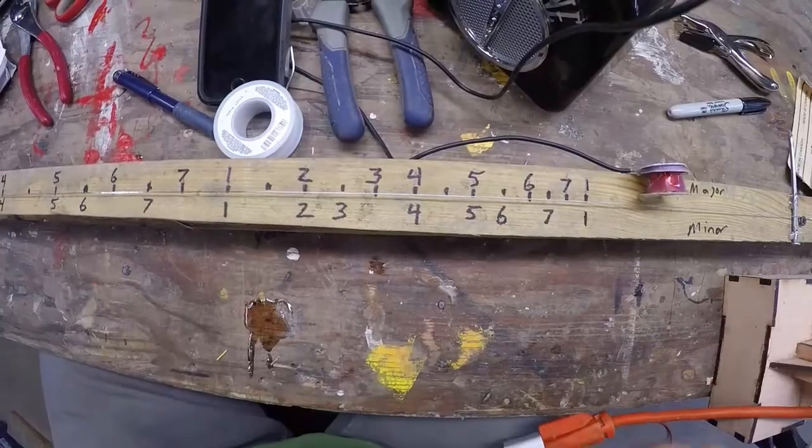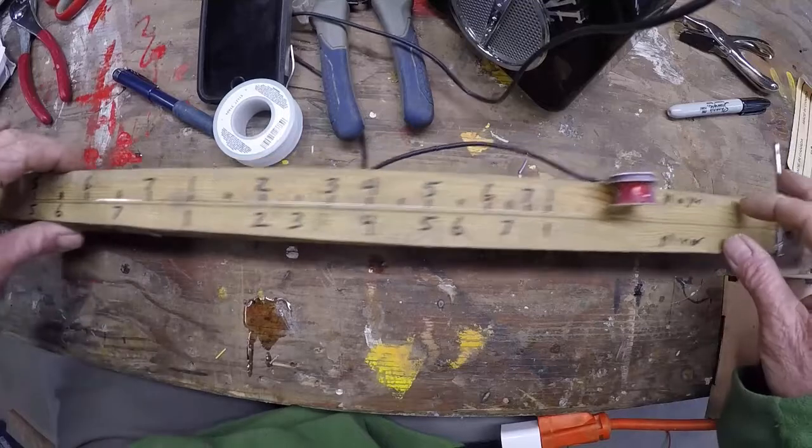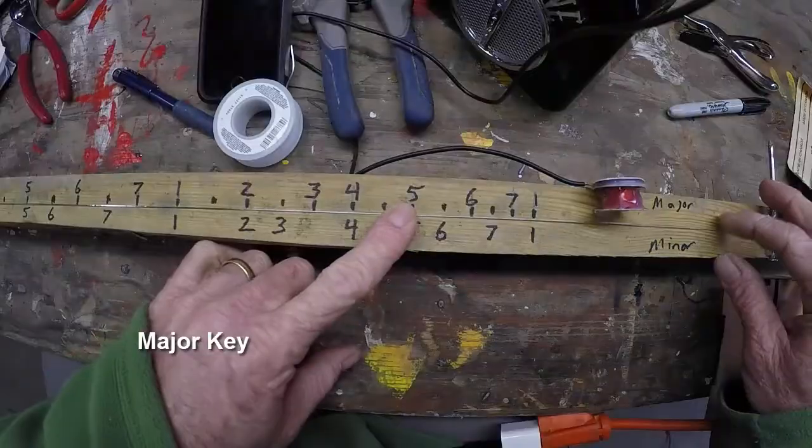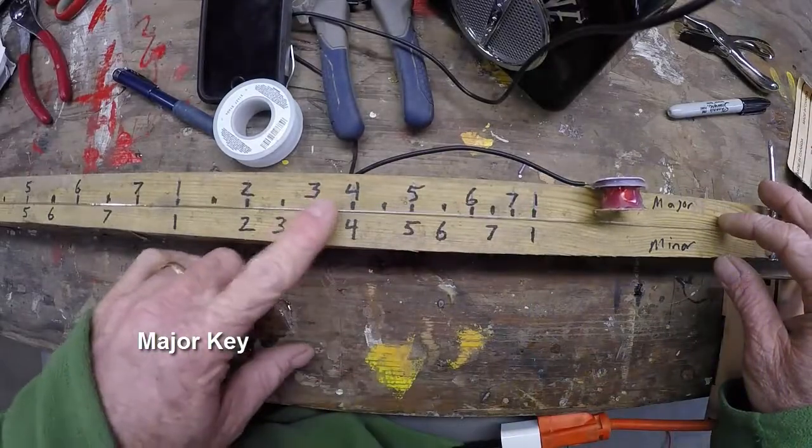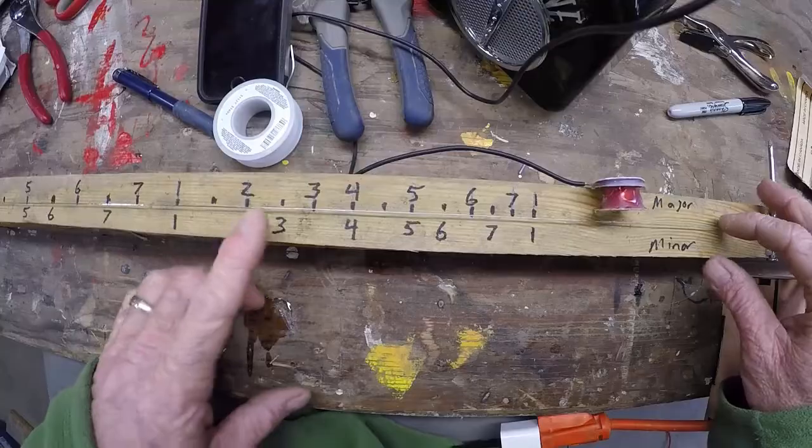That's all. Once you have this nice dirty 2x4 set up, you can play some little songs with it. Like I already showed you, you can play Twinkle. You can play something in minor key.